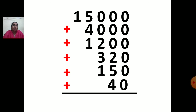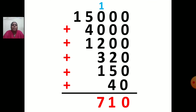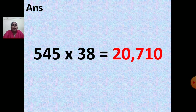Now add all these numbers. 0 plus 0 is 0; 5 plus 2 is 7; 7 plus 4 is 11 — write 1, carry 1 to hundreds. 2 plus 1 is 3; 3 plus 3 is 6; 6 plus 1 is 7. Then 5 plus 4 is 9; 9 plus 1 is 10 — write 0, carry 1. And 1 plus 1 is 2. So your answer is 20,710. That is, 545 multiplied by 38 is equal to 20,710. In this way you have to do all the sums.